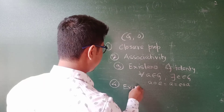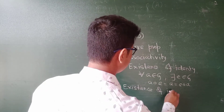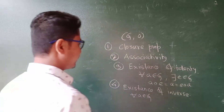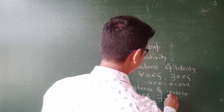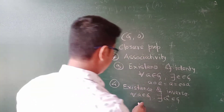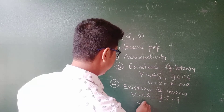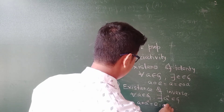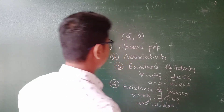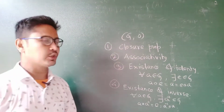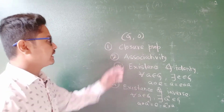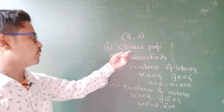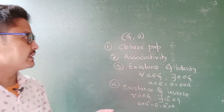Existence of inverse — so for all a belonging to Z, there exists an element a-inverse in Z such that a dot a-inverse gives the identity element. So the algebraic structure is said to be a group — that means this set with respect to this binary operation is said to be a group if it satisfies the following axioms. Number one: closure property. Number two: associativity. Number three: existence of identity.